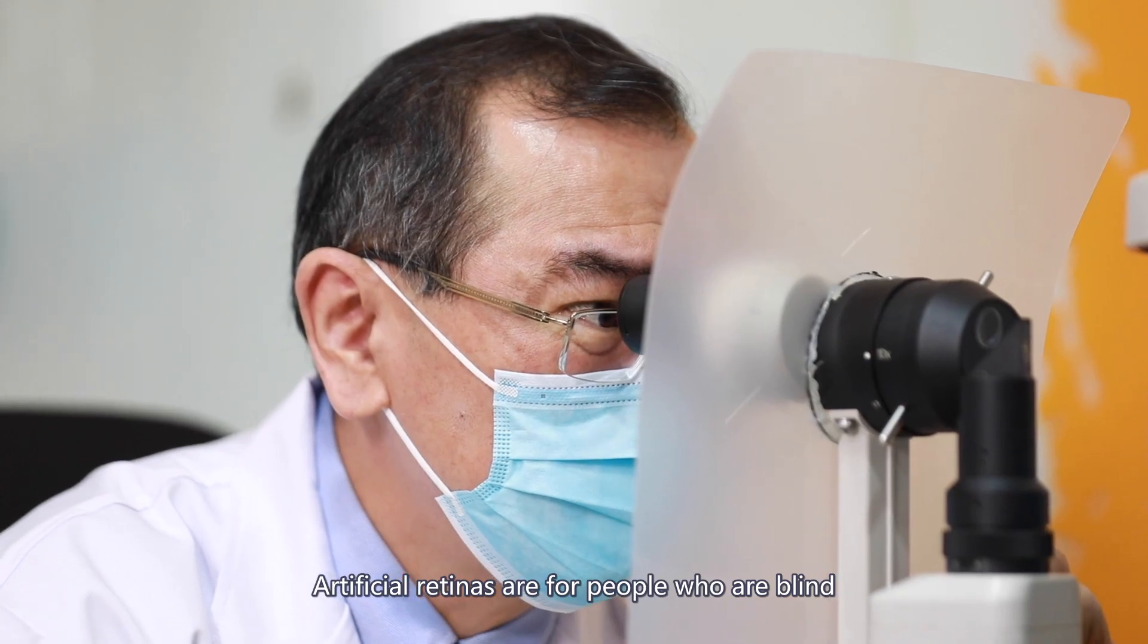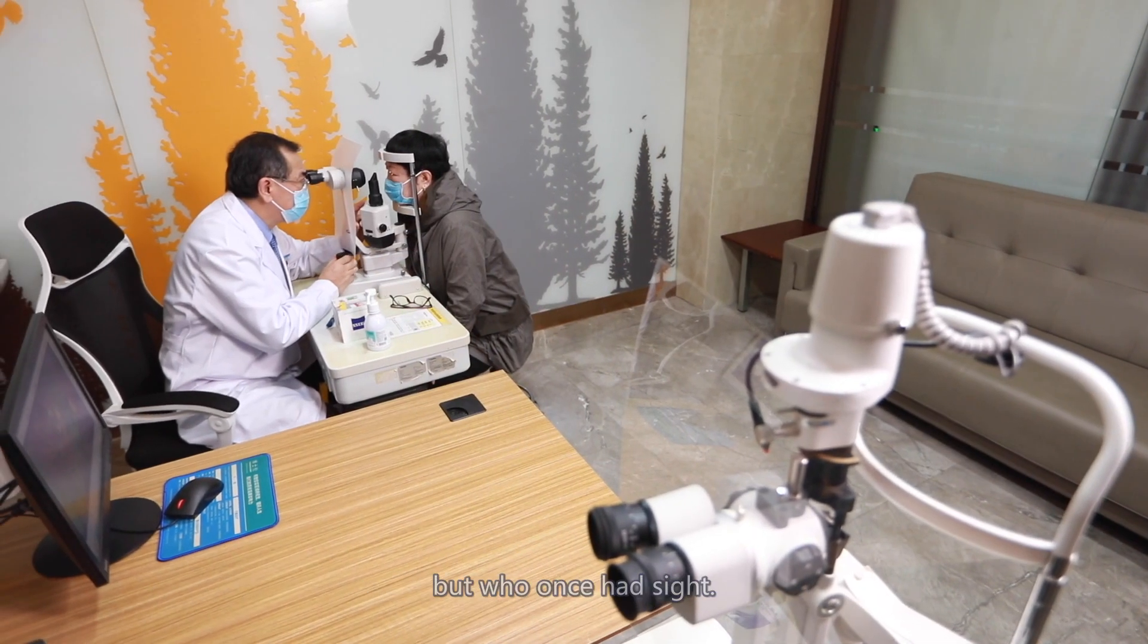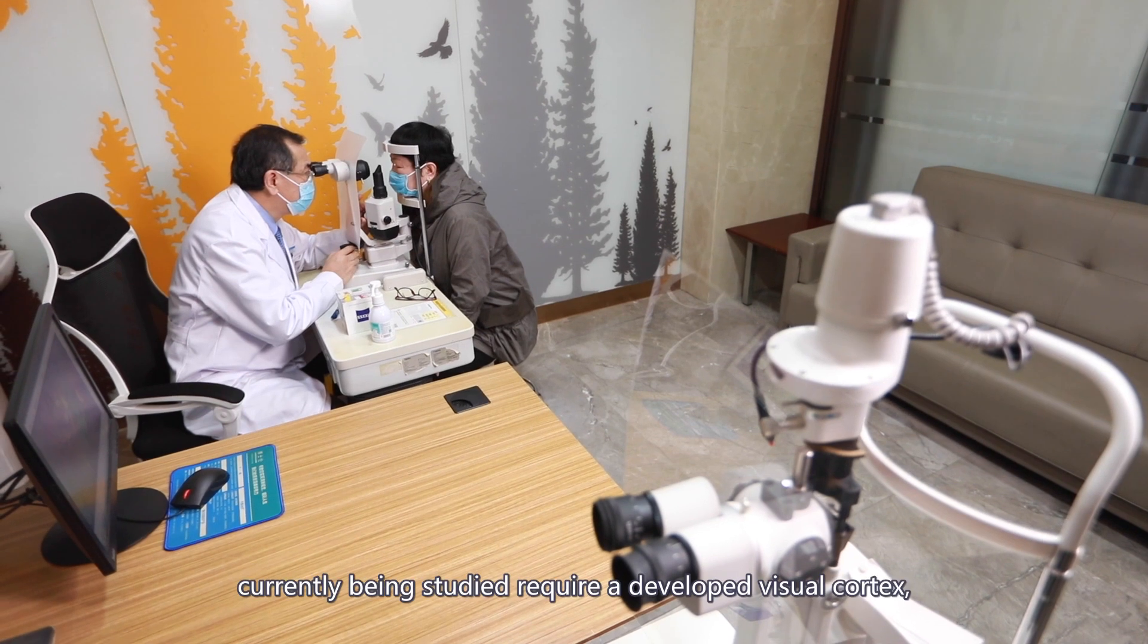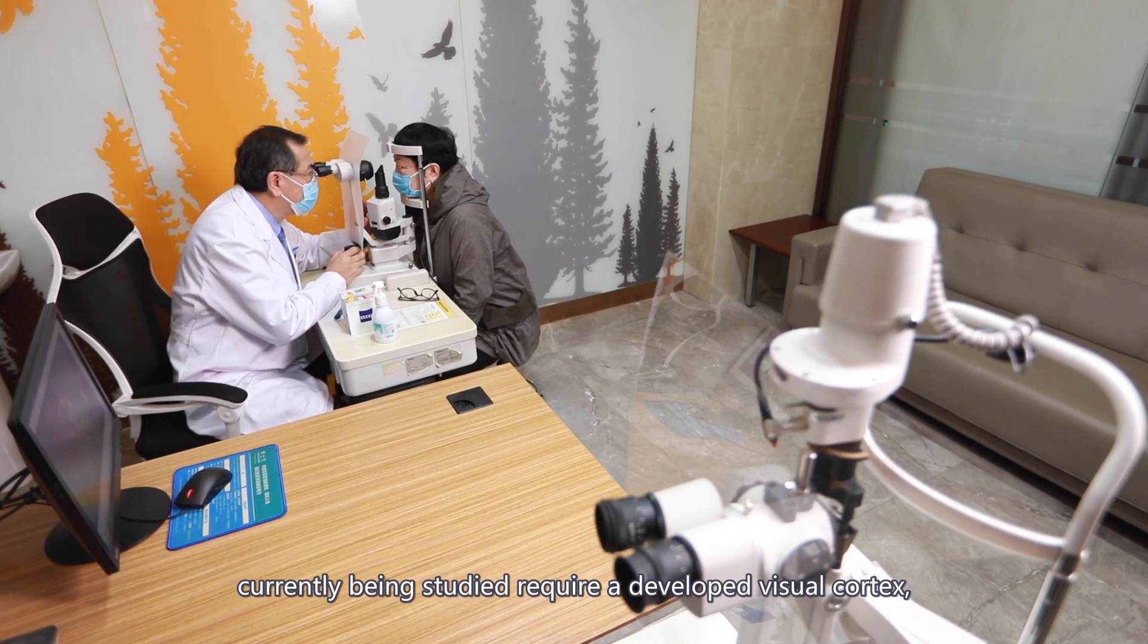Who is suitable for it? Artificial retinas are for people who are blind or have only minimal light perception but who once had sight. All of the prostheses currently being studied require a developed visual cortex.